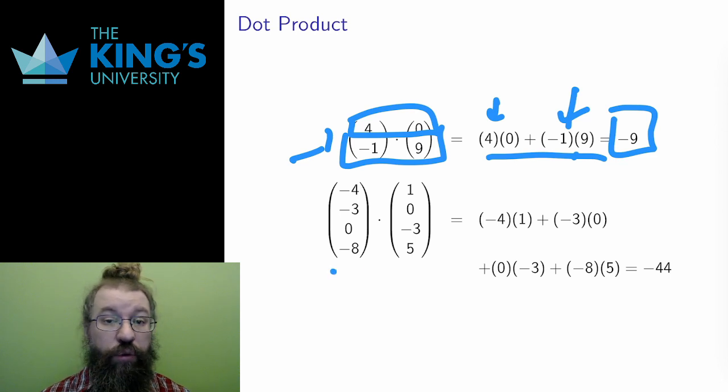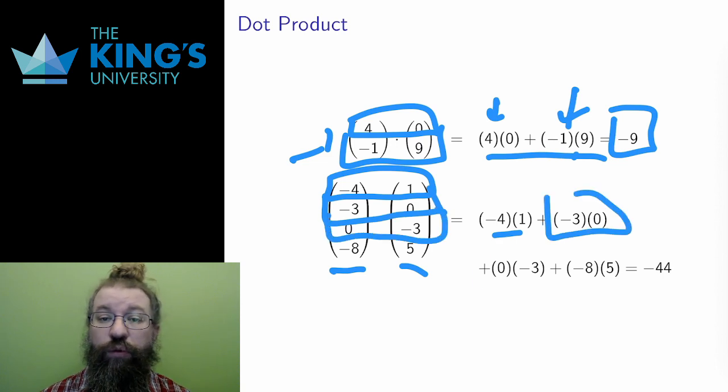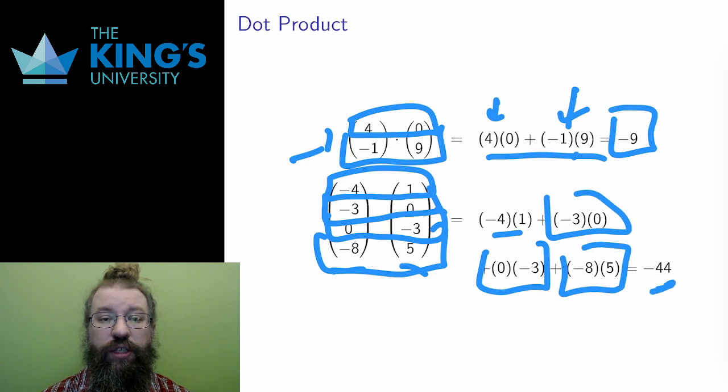Next, here's an example in R^4. The dot product of (-4, -3, 0, 8) and (1, 0, -3, 5) is formed by multiplying the first entries together, -4 times 1, and then the second, -3 times 0, and then the third, 0 times -3, and then the fourth, -8 times 5, and then adding the result together to get -44.